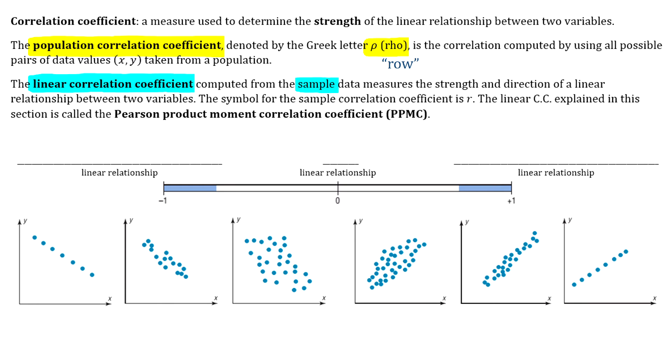And that's going to give us a measurement that tells us the strength and the direction of the linear relationship between the two variables. And that has a different symbol. The symbol for the linear correlation coefficient is a lowercase r. So rho is the population correlation coefficient, R is the linear correlation coefficient.